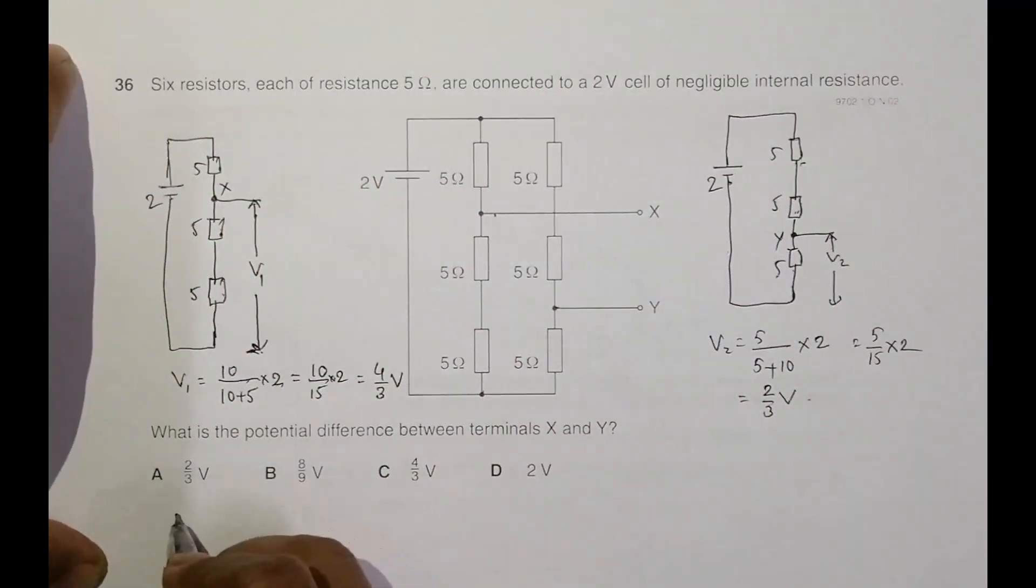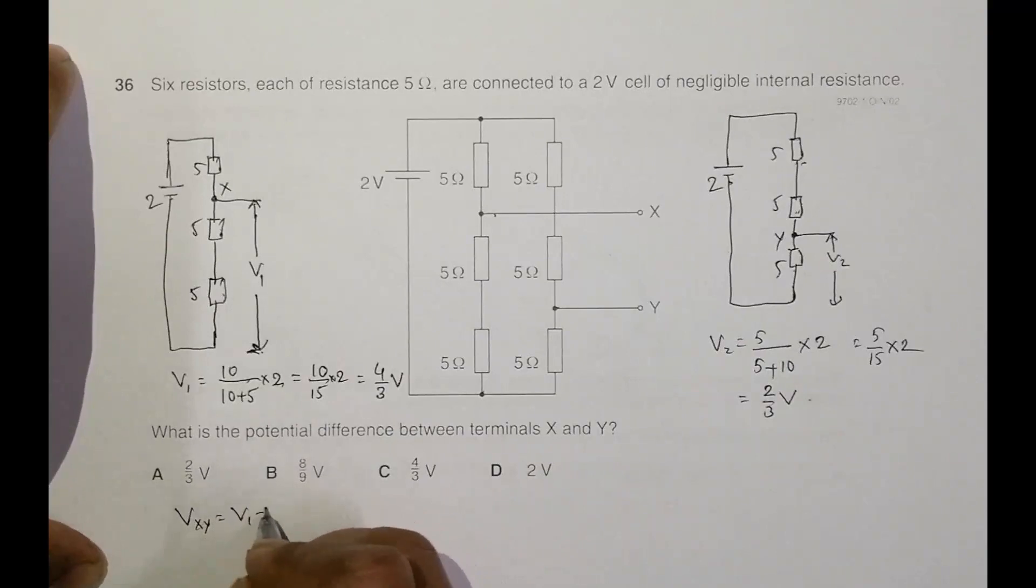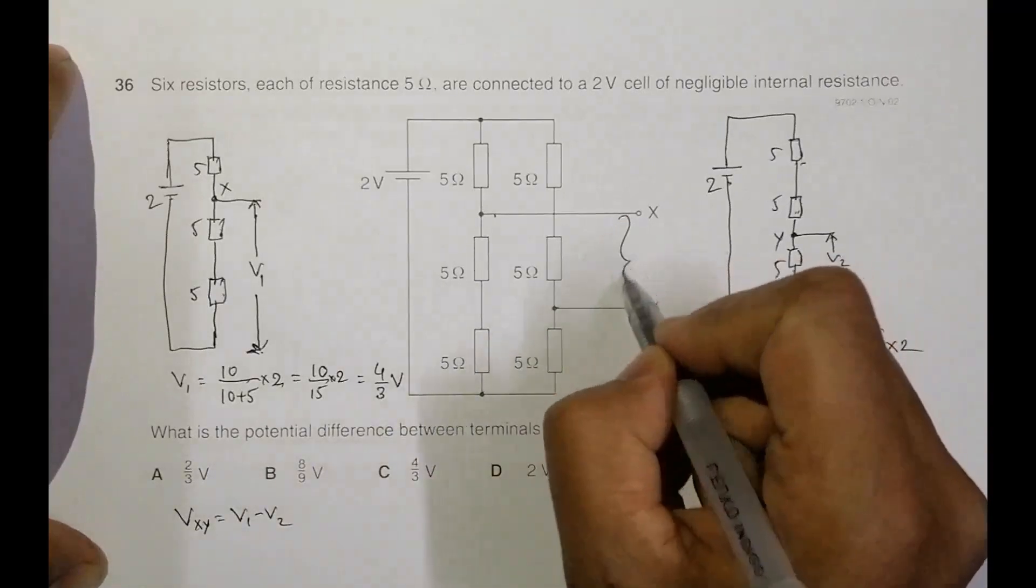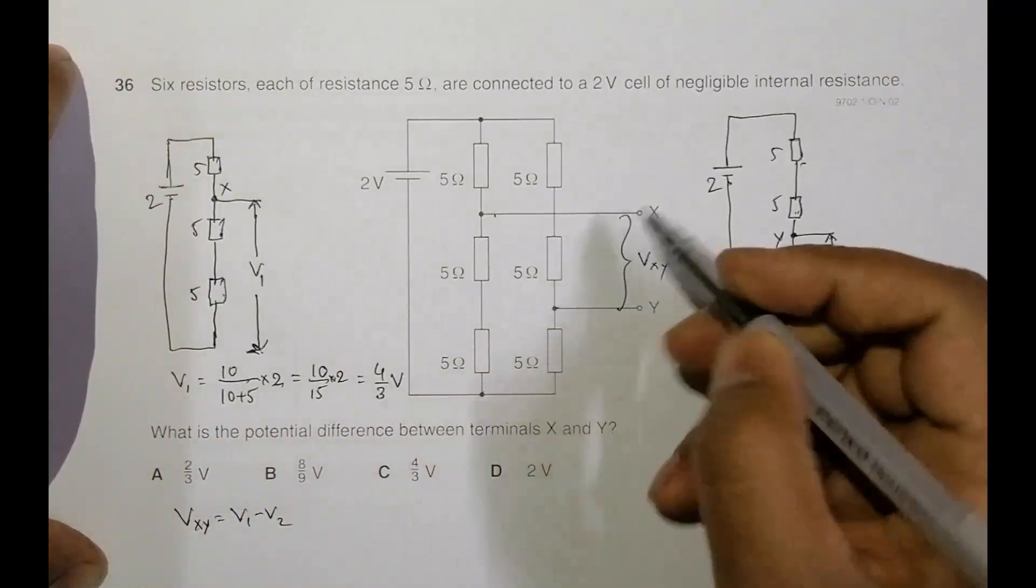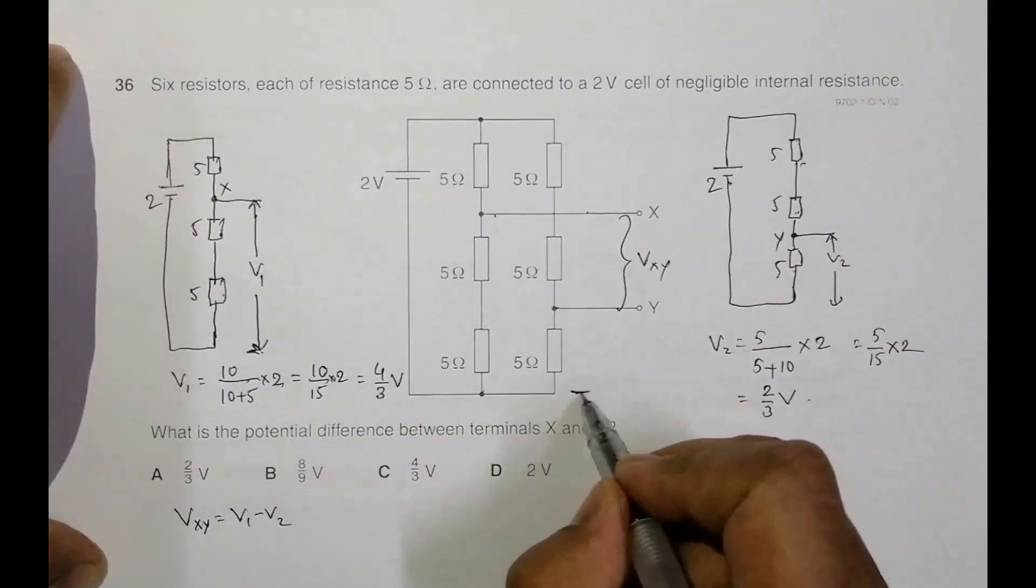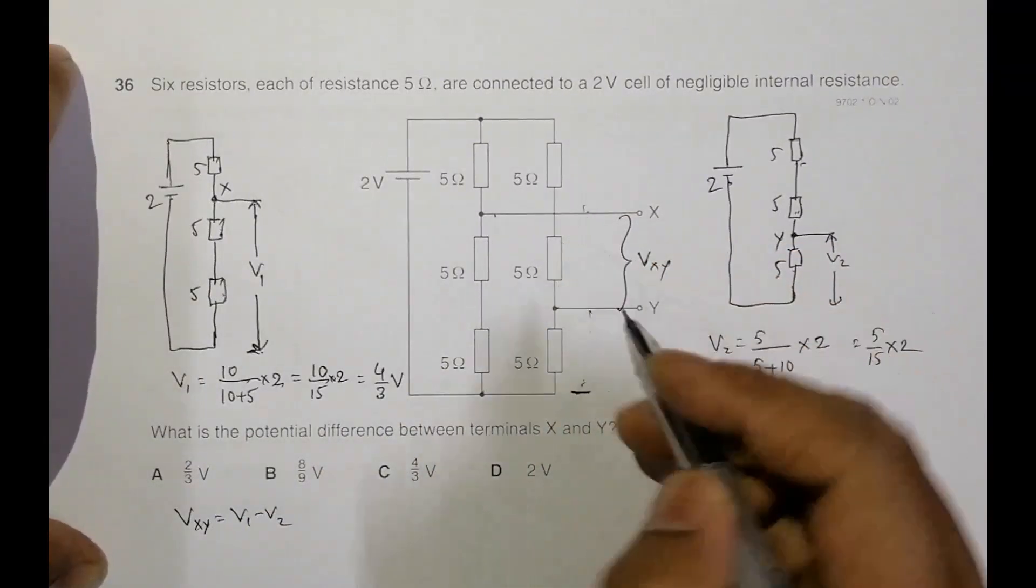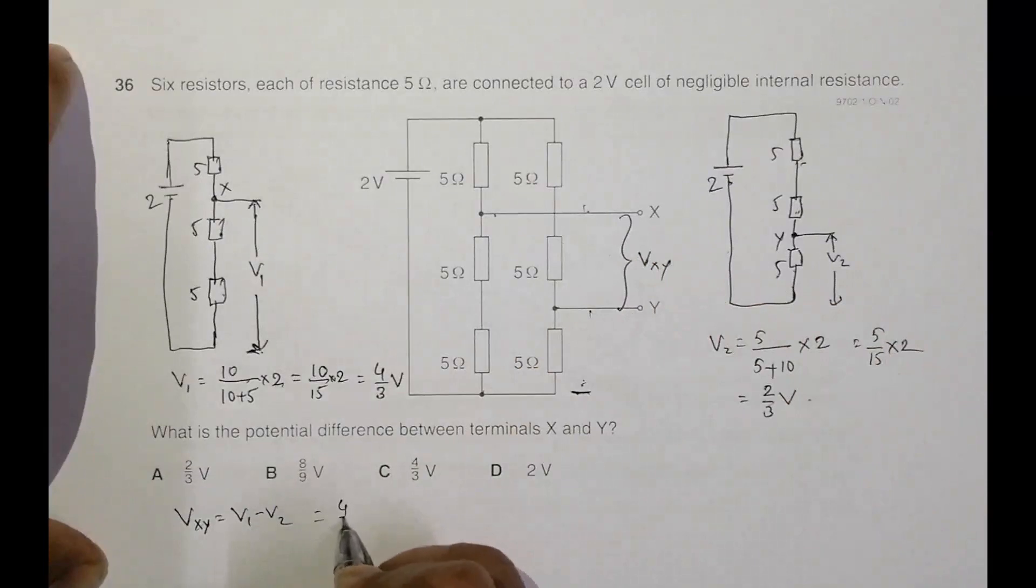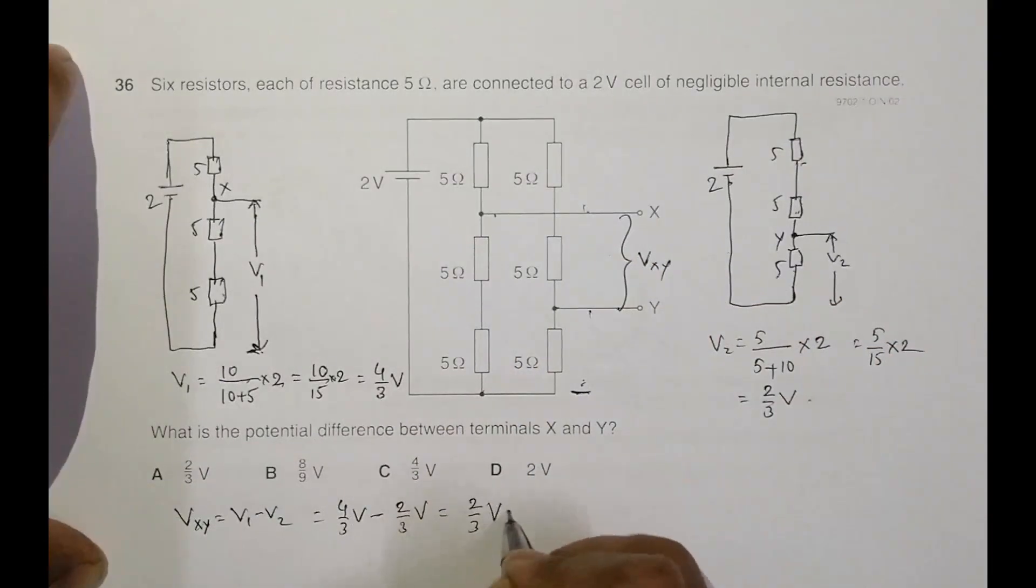So now we have, Vxy is equal to V1 minus V2. So the PD between these things, Vxy should be equal to this PD. From here to here, this PD minus this PD. So it's equal to 4 by 3 volt minus 2 by 3 volt, equal to 2 by 3 volt.